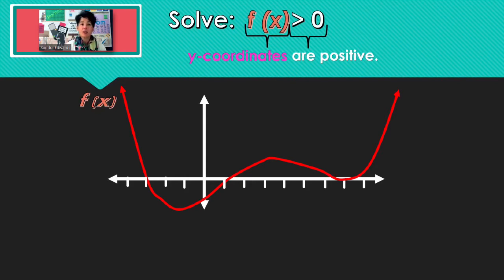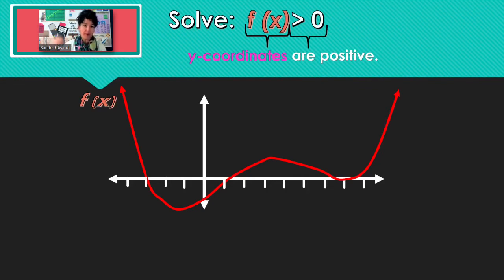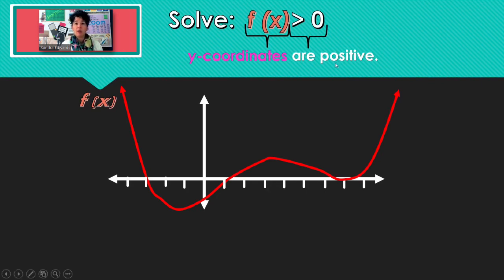If you were to solve an equation — like 2x plus 5 equals 19 — your final answer would be x equals a number. Same thing with the inequalities: the answers are the x's. So we're looking for the x's where our y-coordinates are positive. Let's look through this graph again from left to right.